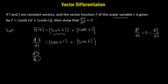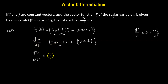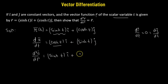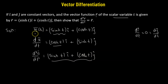Now let's take the derivative again on both sides with respect to t. On the left-hand side we have the second derivative of r. On the right-hand side, we take the derivative of dr/dt: the derivative of cosh(t) gives sinh(t) i-cap, and the derivative of sinh(t) gives cosh(t) j-cap.